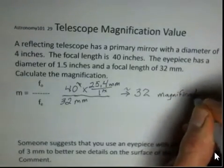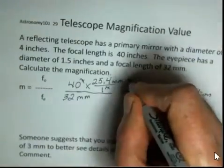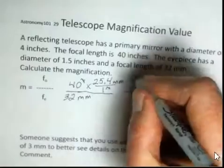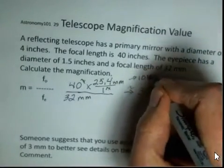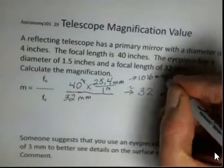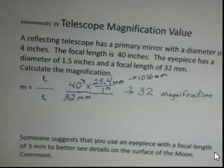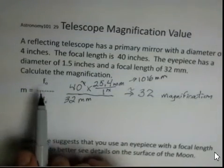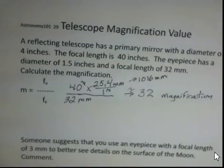If you did calculate an intermediate number here for the focal length in millimeters, 1016 millimeters for the 40 times 25.4. But that's how we calculate magnification, focal length of the objective divided by focal length of the eyepiece.